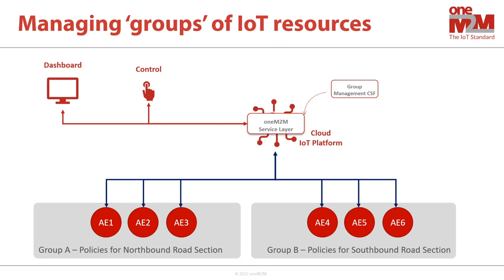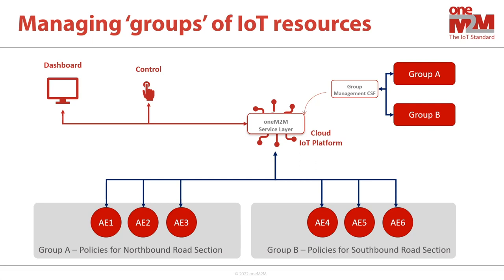I have updated our illustration to show each light as an application entity using oneM2M terminology. Each light has a unique identity from AE1 to AE6. The next thing I want to point out is the oneM2M service layer, which contains oneM2M's set of common service functions. In the illustrations, I have called out the group management common service function. We use oneM2M's group management common service function to create two group resources that refer to the street light AEs for each group.